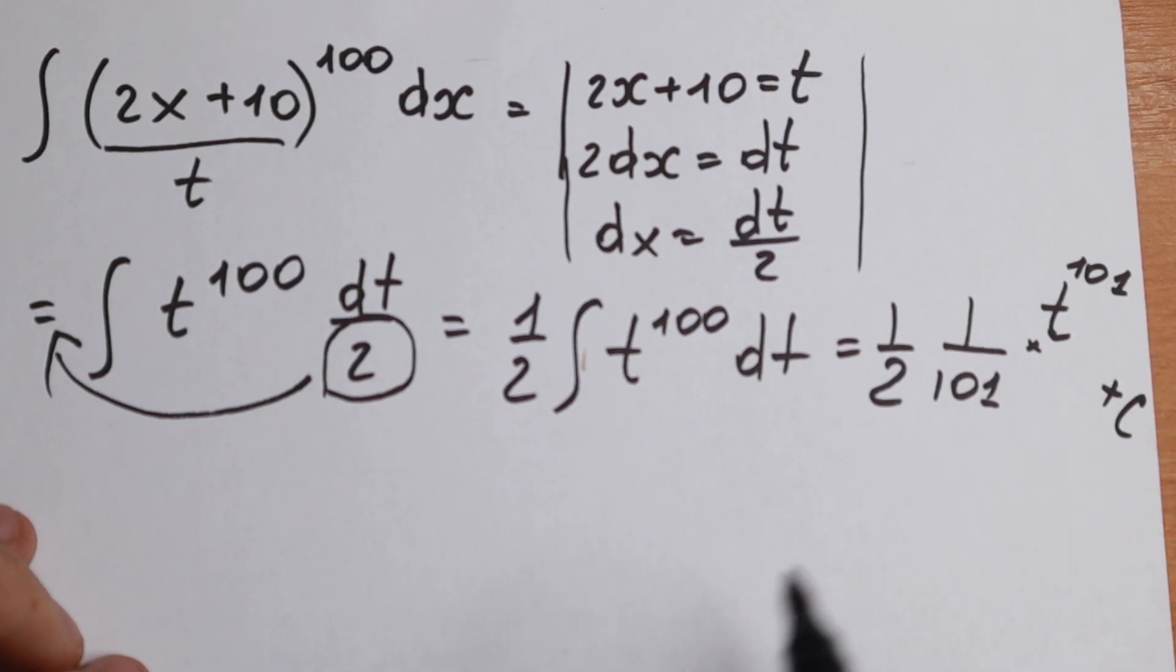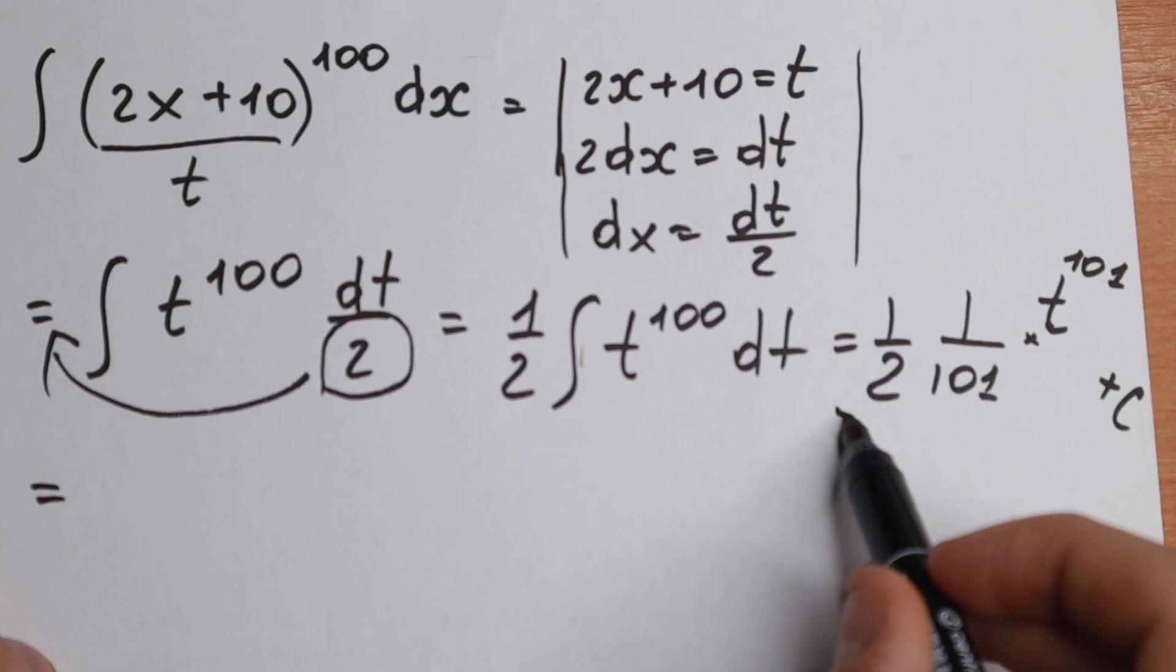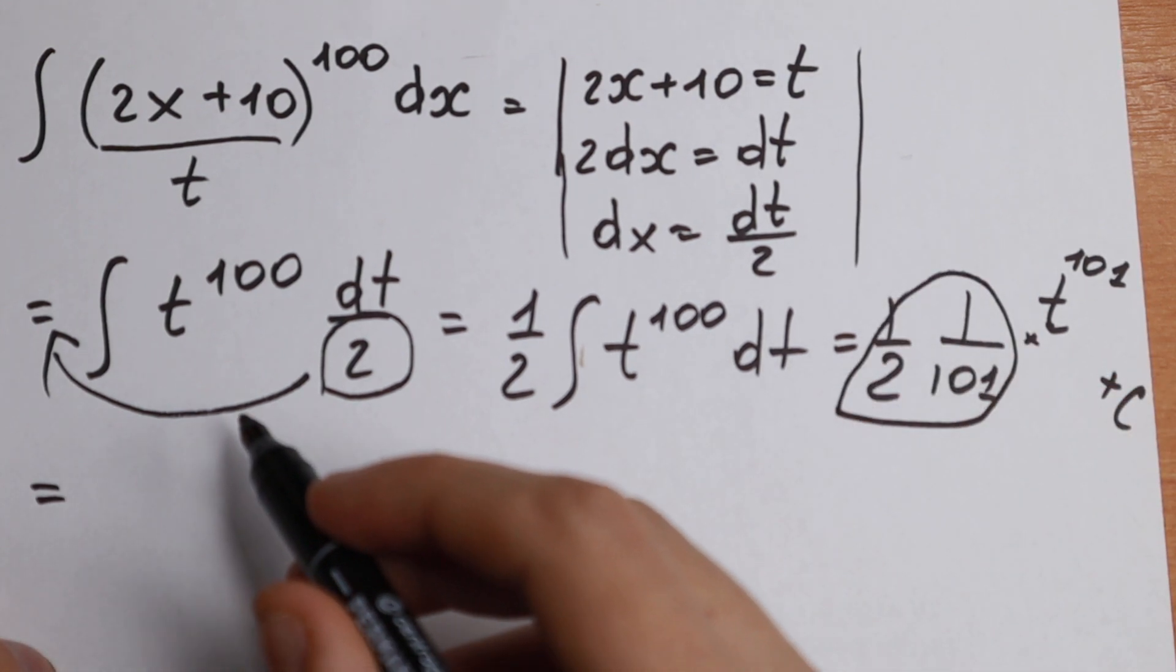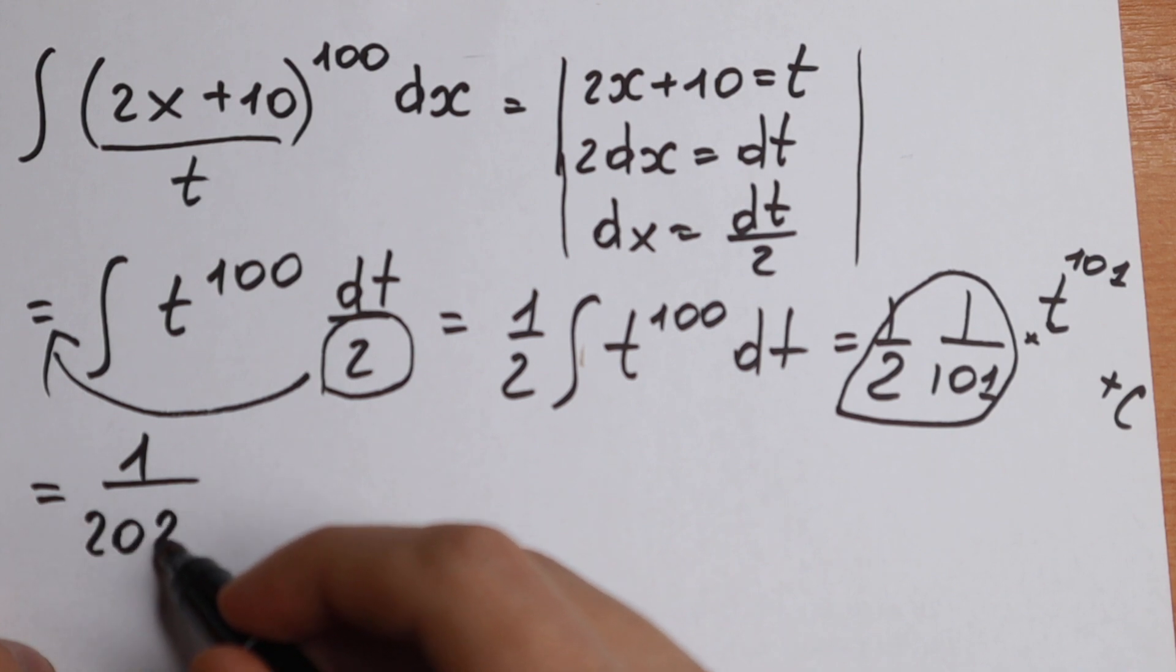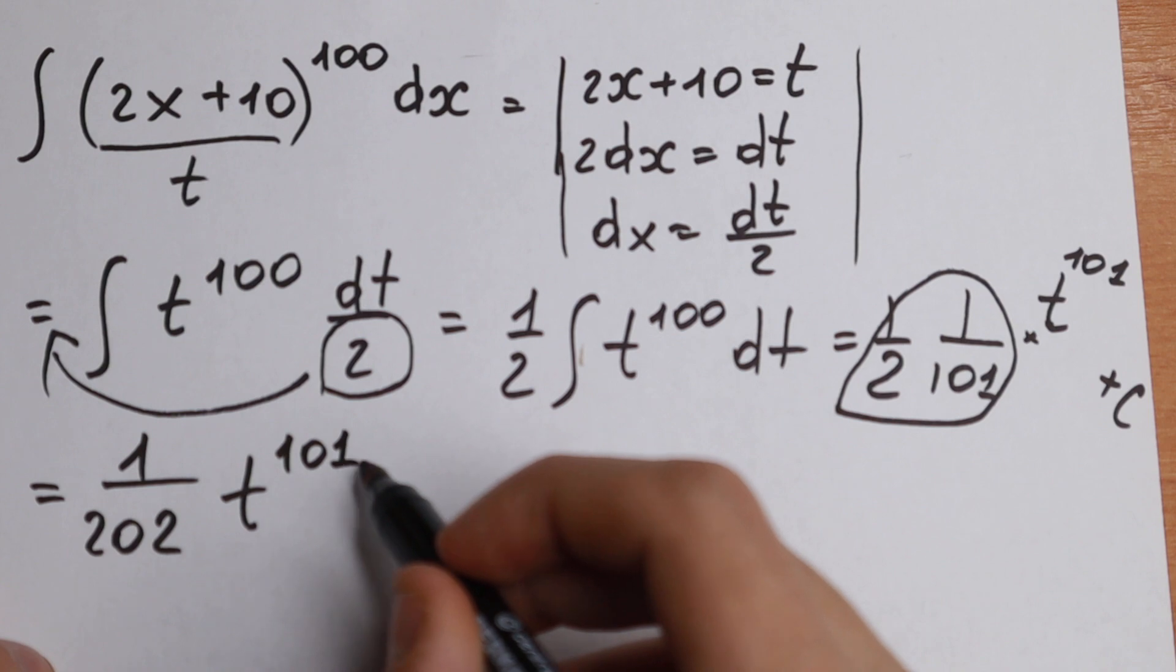And plus C. And when we multiply all of this, we will have a constant: 1 divided by 202, and t to the power 101, and plus C.